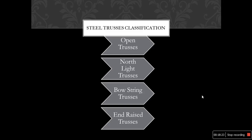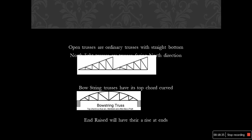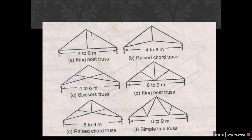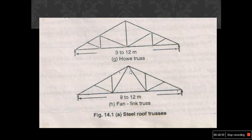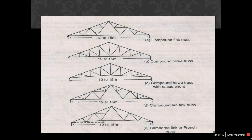Steel trusses are further classified into open trusses, north light trusses, bowstring trusses, and end-raised trusses. Common configurations include king post truss, raised cot truss, scissor truss, and simple fink truss. For spans greater than 9 to 12 meters, all trusses and fanning trusses are constructed. Further classifications of fink trusses include compound fink, compound howe, and compound howe truss with raised cot for spans of 12 to 15 meters, as well as compound fan-fink trusses and cambered fink or French truss.